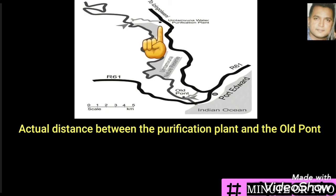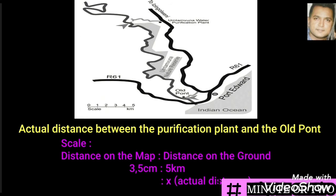The purification plant is the dot on the top. The old pond is at the bottom as well. Currently we know that we have the scale and we need to work out the actual distance which is on the ground, and we call this x because this is what we will be working out.